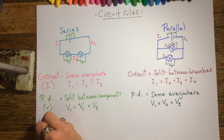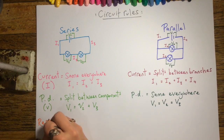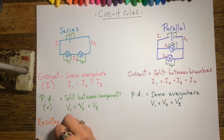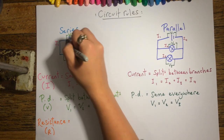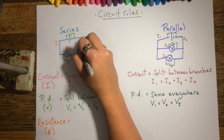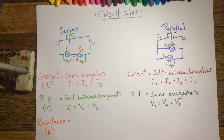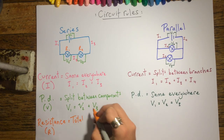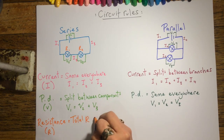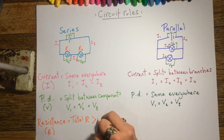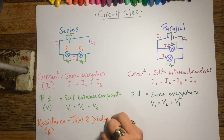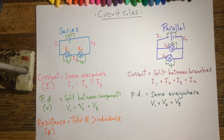On to resistance. In a series circuit, each charge is going to have to pass through each component. So the total resistance is going to be bigger than the individual resistances of the components — they add together to give us the total resistance of the circuit.